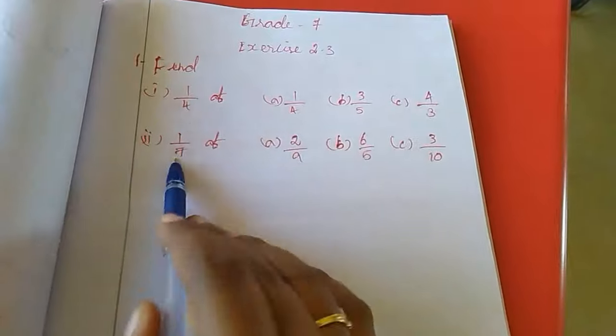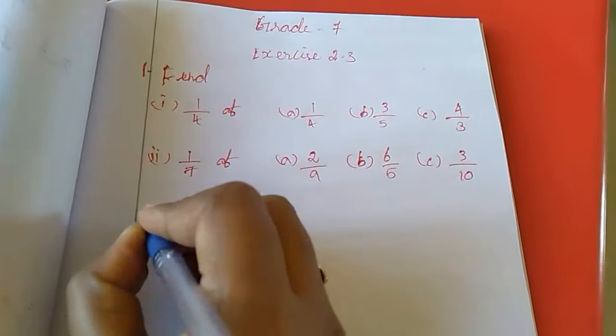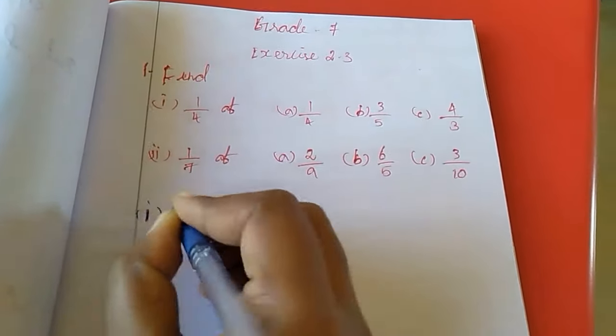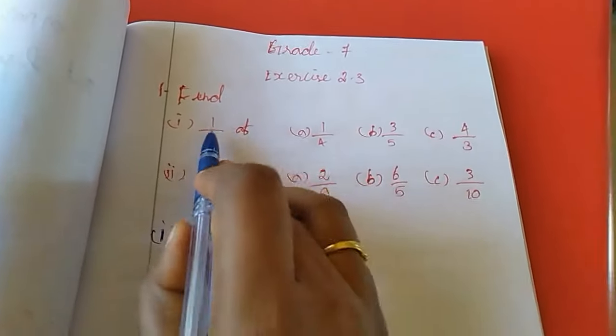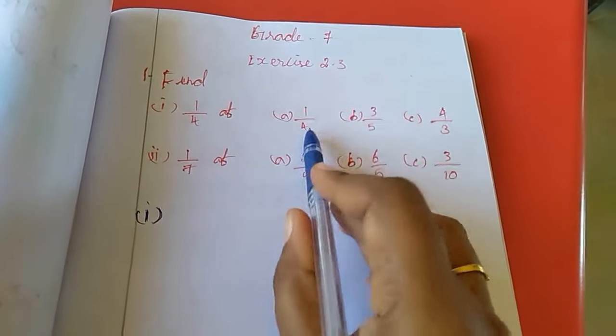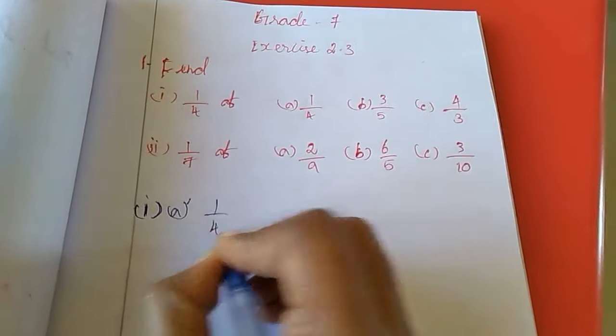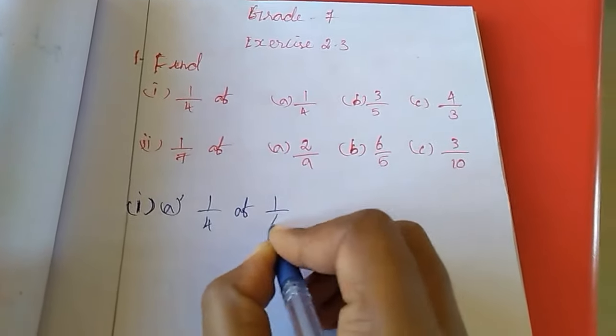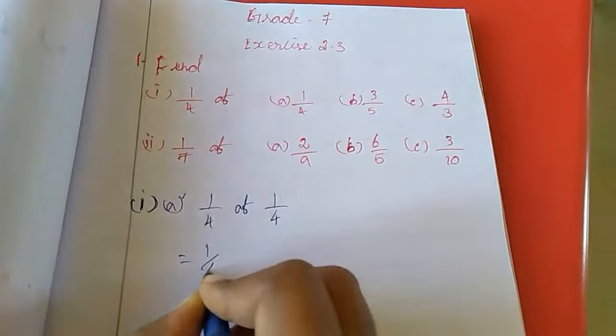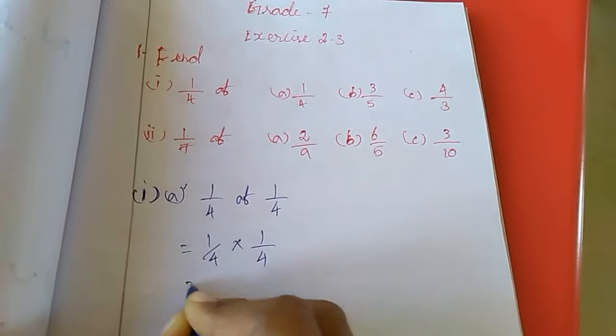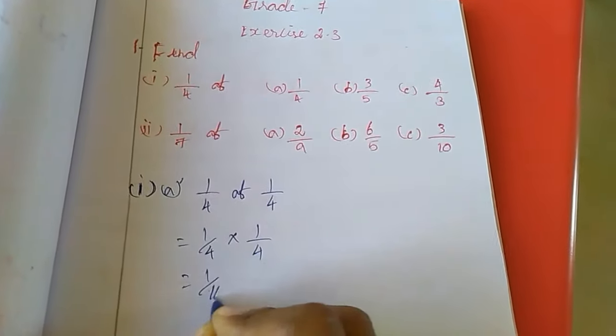In this first sum I am going to do, second sum is homework for you. First sum is, see here, 1/4 of 1/4. So first subdivision is 1/4 of 1/4, therefore 1/4 of means multiplication 1/4. If you multiply you will get 1/16.